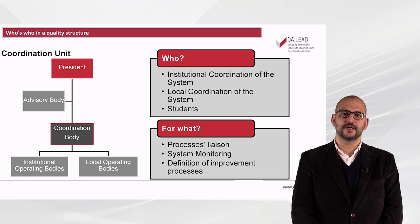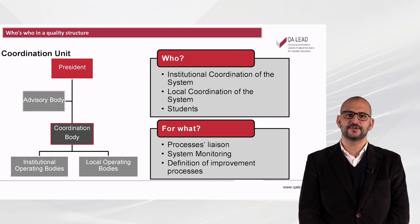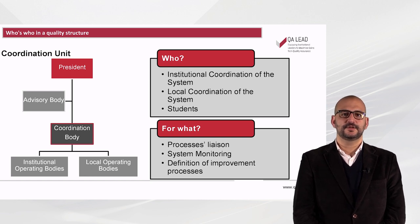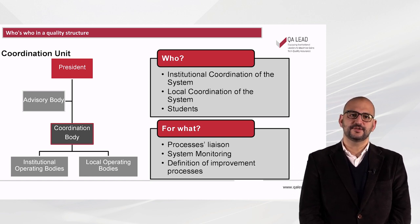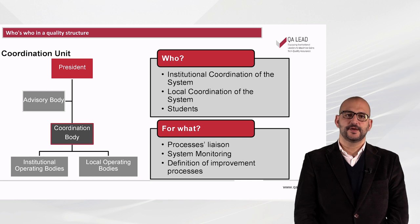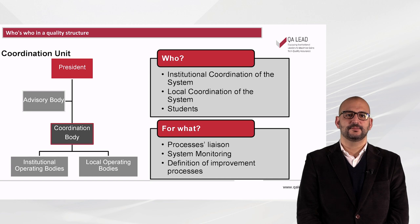In addition, it will be useful to have a coordinating body for the quality system, which will be responsible for the operational decisions of the quality systems. This structure may comprise, for instance, institutional coordination of the system, local coordination of the system, students, and others. This body could have the following functions: process loyalization, system monitoring, definition of improvement processes, among other functions.